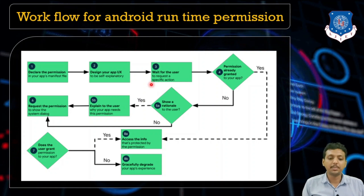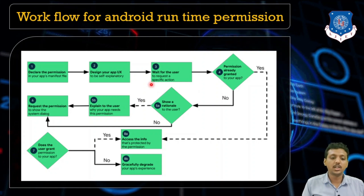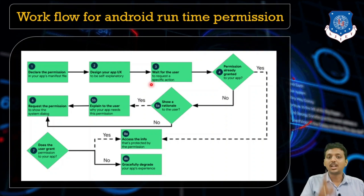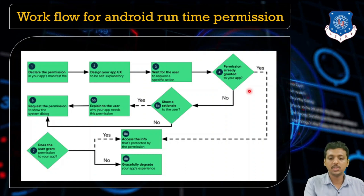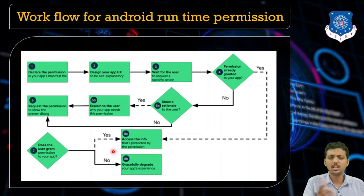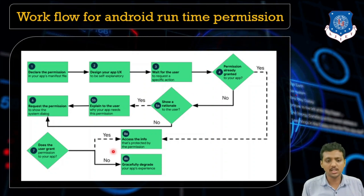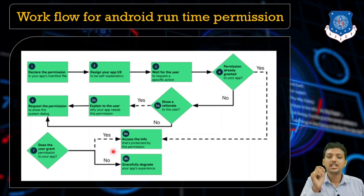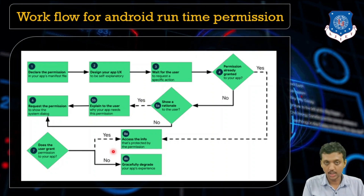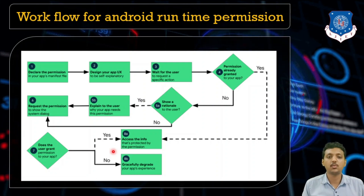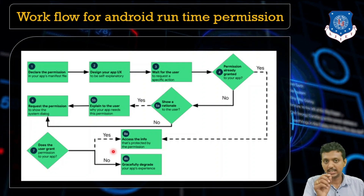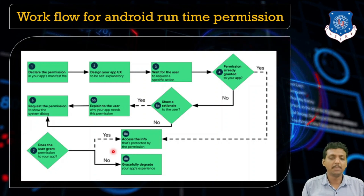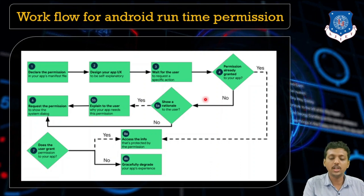Step three: after asking for the permission, wait for the user to request the specific action. Step four: if the user clicks yes and allows the permission, there is no issue — you can directly access the user's data. But what if the user says no and clicks deny?